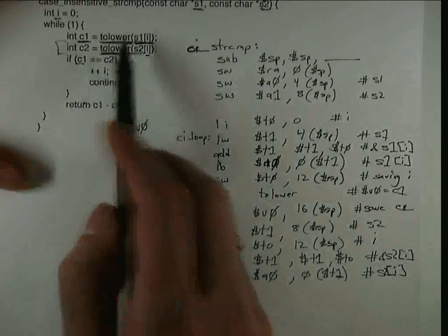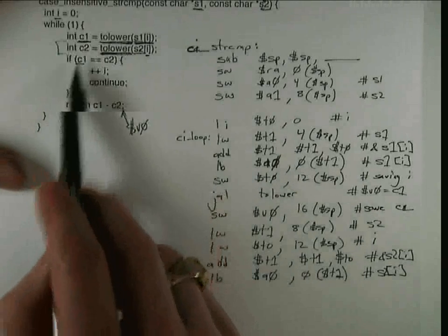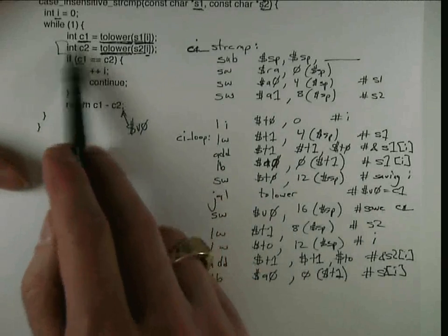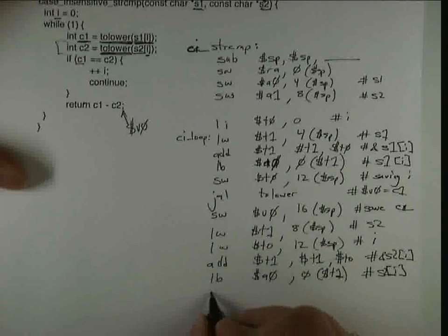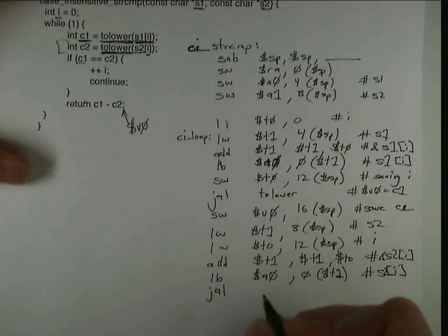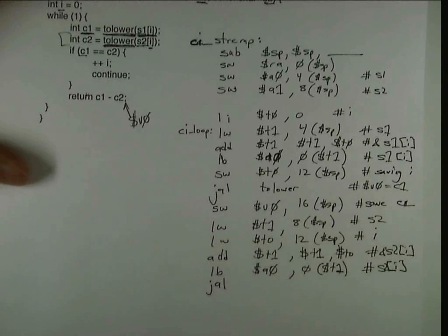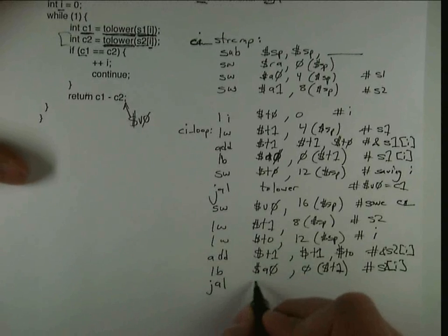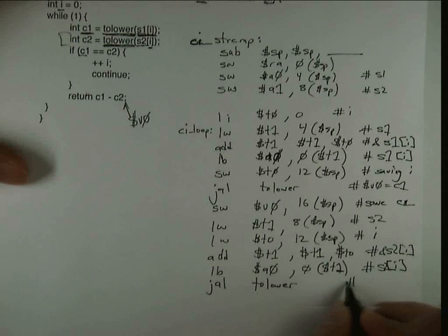There's no changed value of I here. That happens down here. So I don't need to save it again. Because saving it would just be extra work and it wouldn't actually change the value in memory. So I'm going to not do anything more than I need to do. And I'm going to call tolower.